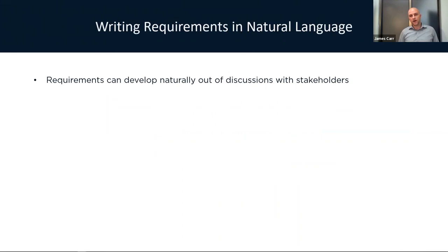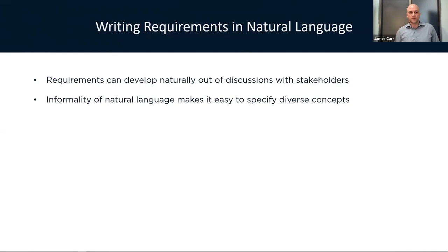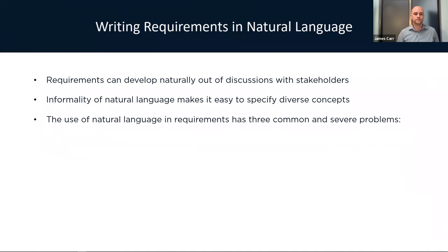Writing requirements in natural language — there are alternatives to this. Requirements can develop naturally out of discussions with stakeholders, in the same way that you're communicating with them to understand what this product, device, service, or software tool is going to accomplish. Having your requirements written in natural language makes it a lot easier to formalize those requirements as you move along. The informality of natural language makes it easy to specify diverse concepts — you don't have to struggle to figure out how to implement a system or method to communicate this; you can write it in your own words.